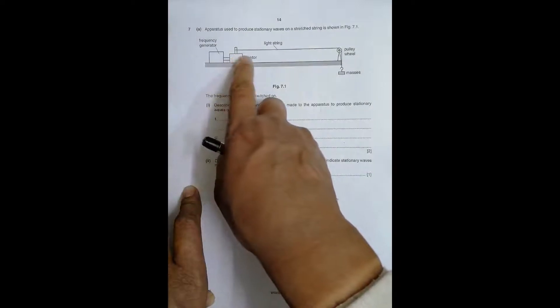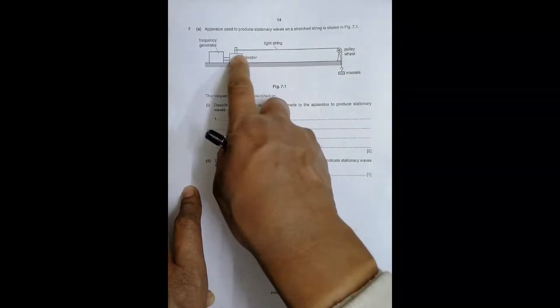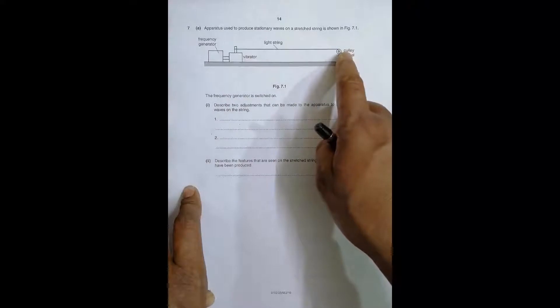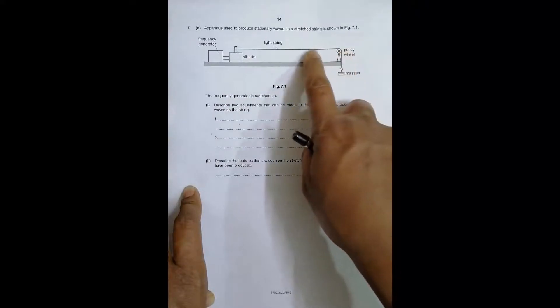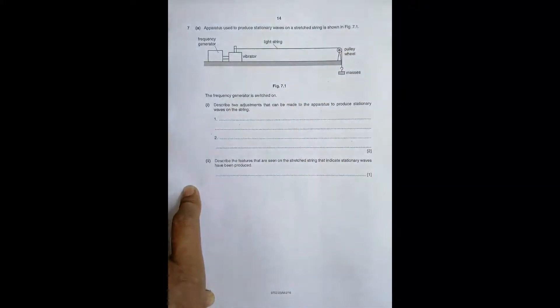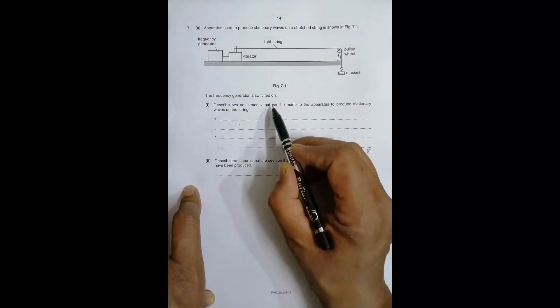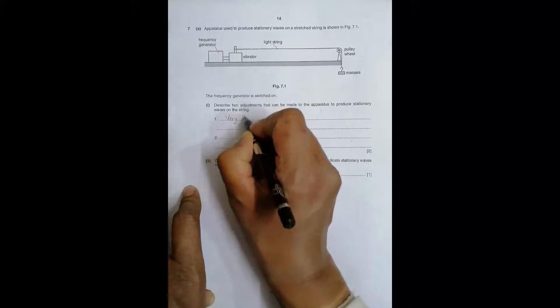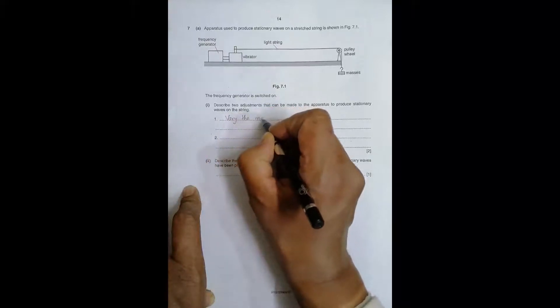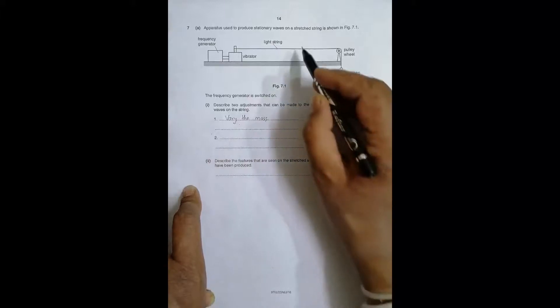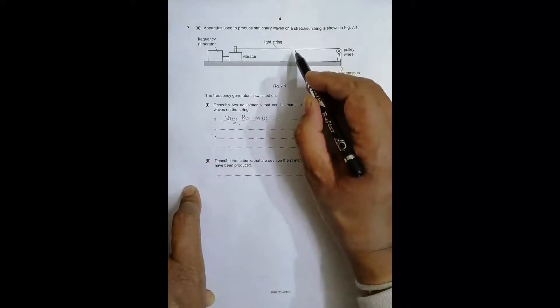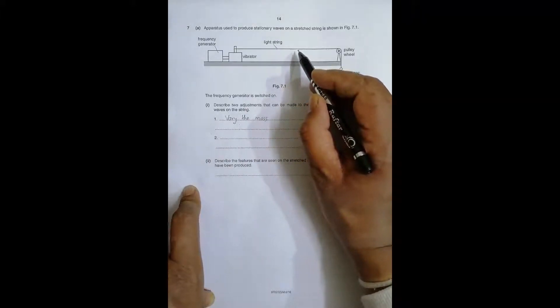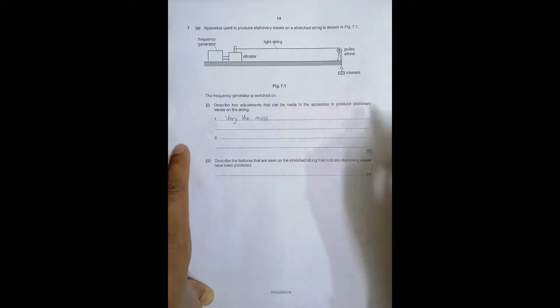They might bring it near the pulley wheel or like this, or they might even change the position of the pulley wheel to bring it here or like that. So definitely they do something. First is vary the mass. Varying the mass gives a change in tension force, and because of that there might come a condition when the stationary waves are formed.